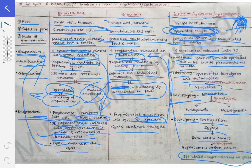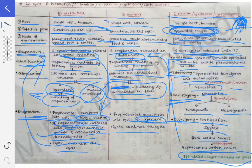Then sporogony occurs and four sporozoids are formed within the oocyst. This sporulated oocyst is released in the feces — that is the whole life cycle in case of the coccidian parasites. The sporulated oocyst released in the feces again contaminates food, the sporulated oocyst enters the gut, again releases four sporozoids, and the cycle of invasion, schizogony, gametogony, and sporogony continues.